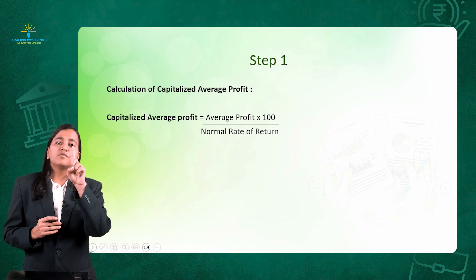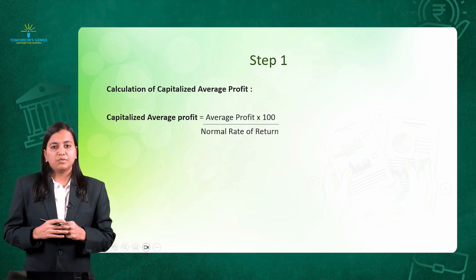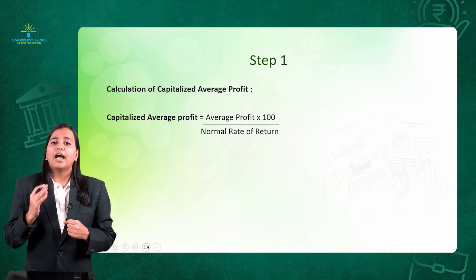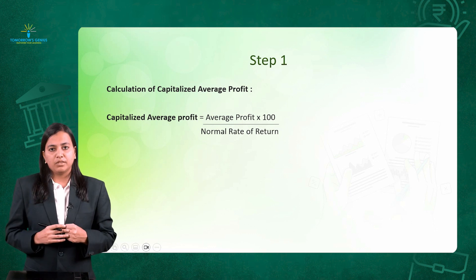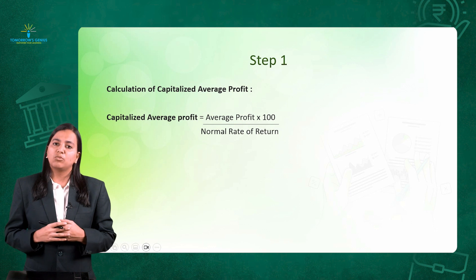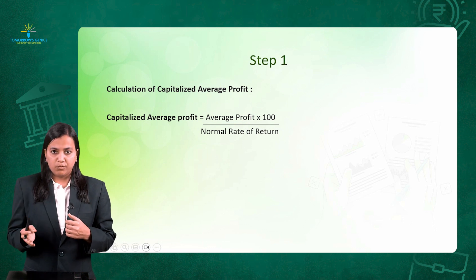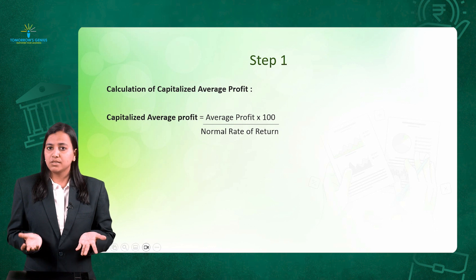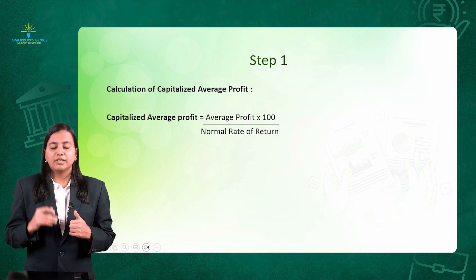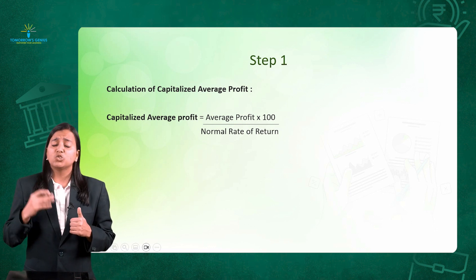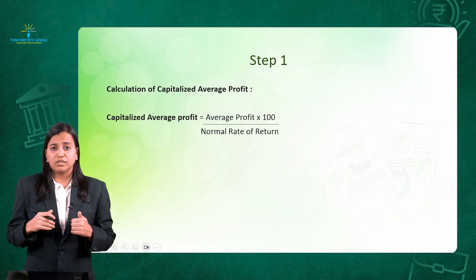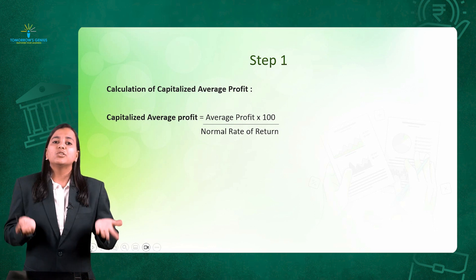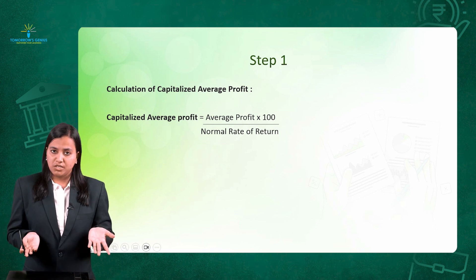Average Profit comes from the first method we studied — the Average Profit Method. How do we calculate Average Profit? It is Total Adjusted Profit divided by the Number of Years, then multiplied by 100 divided by NRR (Normal Rate of Return), which is given to you in the question.